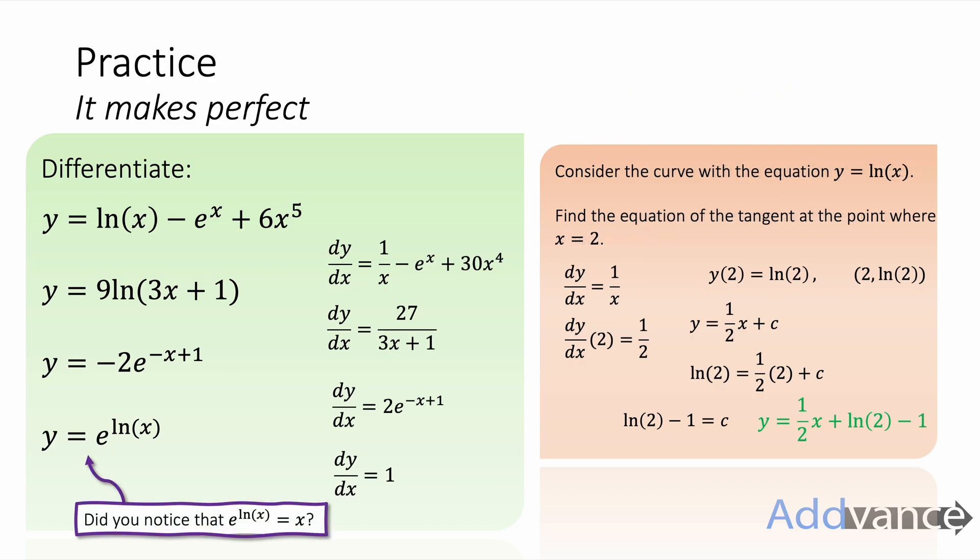Did you notice that e to the power ln of x just simplifies to be x because the exponential and the logarithm cancel out. They are two inverse functions of each other. And so we're just differentiating y equals x. And y equals x differentiates to 1. Very nice.